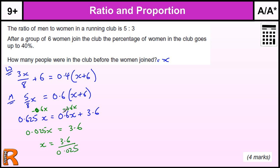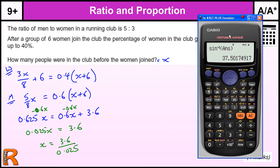Now if we bring the calculator in and actually use it for this question, we have 3.6 divided by 0.025. And that gives us 144, which is the answer for 4 marks.